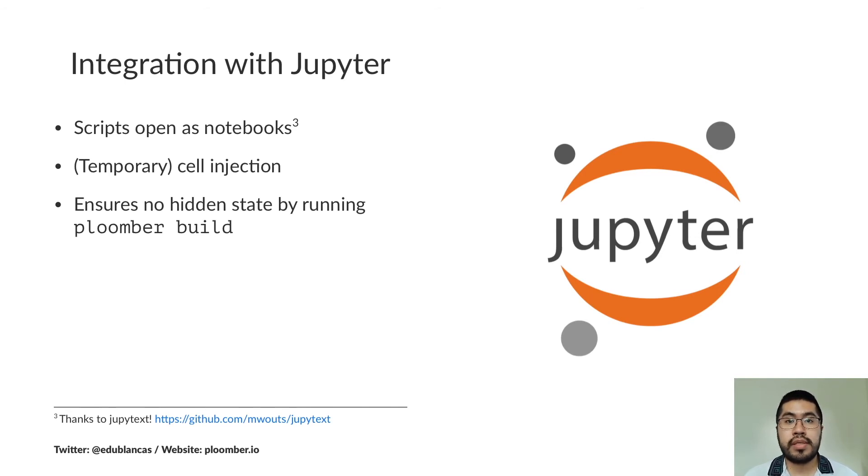Since Plumber has to do this cell injection process, your code, the code that you write, is not going to run as it is. To enable interactive development, Plumber integrates with Jupyter. So when you open a script, it's going to open it as a notebook. This is thanks to the Jupytext package. Then Plumber is going to inject the cell that you need so that you know the location for your input files. In this way, you can interactively develop your scripts. Finally, since you still have to run Plumber build to get your pipeline up to date, you can make sure that there is no hidden state in your pipeline. This is a nice double check just to make sure that things run.